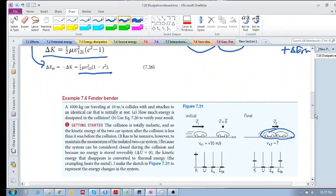Let's do an example here. We've got a car traveling at 10 meters per second and a stationary car. They both have the same inertia, 1000 kilograms. They collide and they get attached to each other, so we have a totally inelastic collision.